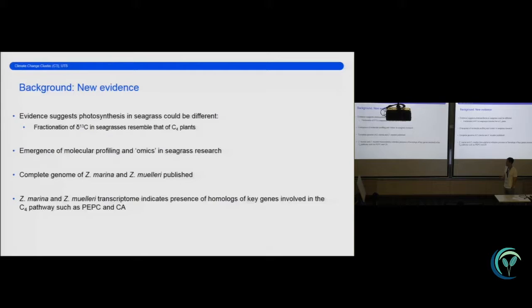So why is this important for seagrass? Well, essentially, seagrasses in the past have been considered to be C3 plants due to the fact that they do not have the Kranz anatomy. However, up until about the 1980s, new evidence have come out suggesting that seagrasses could potentially be photosynthesizing in a different way. Key among them is the fact that the fractionation signature of the 13C-stable isotope within the seagrasses actually resemble more of a terrestrial C4 plant.